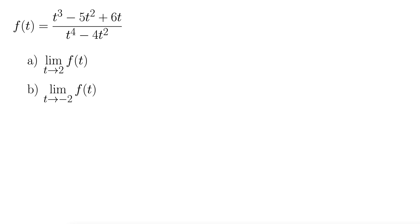Here we have f(t) equals t cubed minus 5t squared plus 6t all divided by t to the fourth minus 4t squared, and we want to evaluate a couple limits. We'll start with the limit as t goes to 2 and then follow up with the limit as t goes to negative 2.